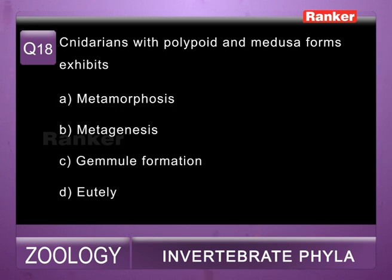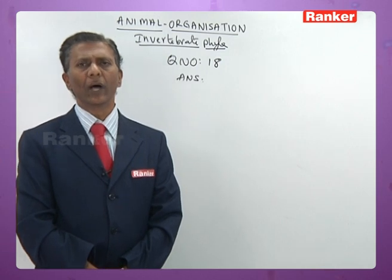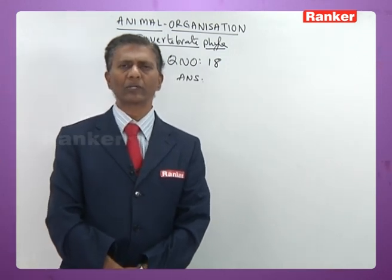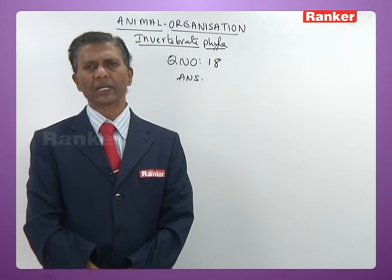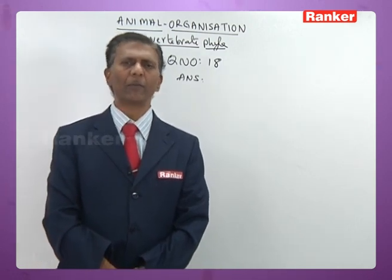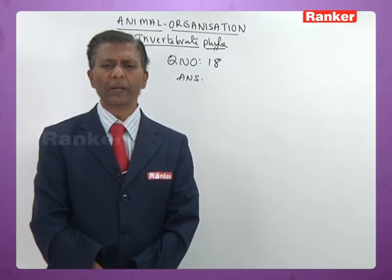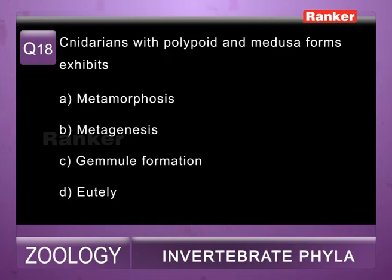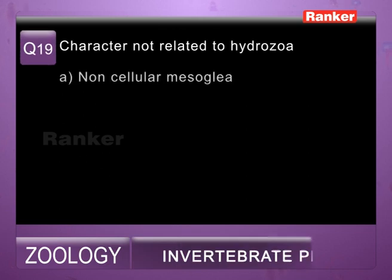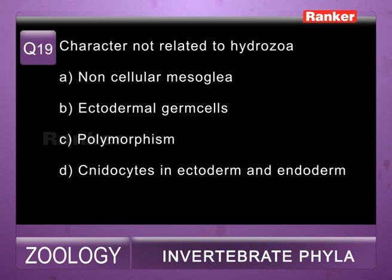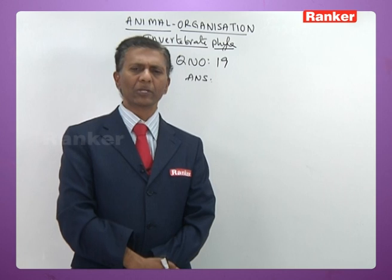Eighteenth question: cnidarians with polyp and medusa forms exhibit — a) metamorphosis, b) metagenesis, c) gemmule formation, d) eutely. In Hydrozoa both polyp and medusa forms are present; in Scyphozoa only medusa; in Anthozoa only polyp. Cnidarians exhibit metagenesis in addition to polymorphism. So eighteenth question correct answer is b) metagenesis.